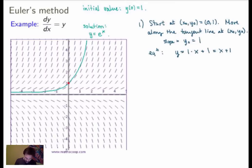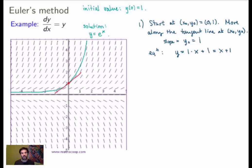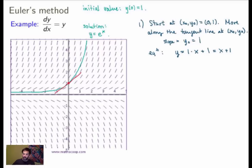We can draw the tangent line here. This tangent line equation already provides an approximation of the solution — it's a linear approximation. We're replacing the solution by the tangent line at the initial point. However, it's a very crude approximation; it's only good locally at this point. If you go far from the initial value, the approximation is not very good anymore.